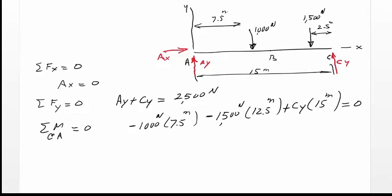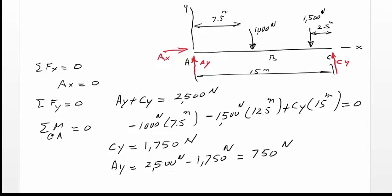So, Cy becomes equal to 0. Solving this equation for Cy, we get Cy equal to 1750 N. And since the sum of two forces were equal to 2500, Ay becomes equal to 2500 N minus 1750 N equal to 750 N. The question has been answered.